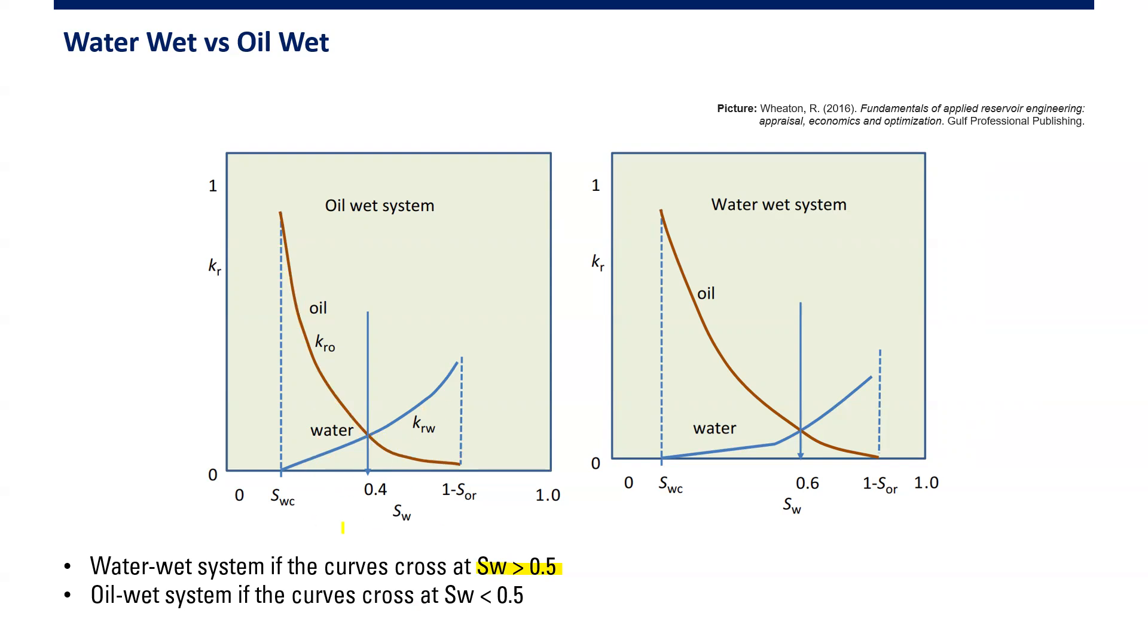So we have a water-wet system if the curves cross at water saturation greater than 0.5. It's the right figure because in this example, the crossing occurs at 0.6. And vice versa—oil-wet system if the curves cross below water saturation of 0.5.